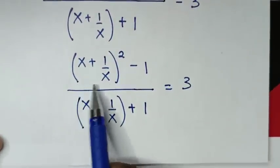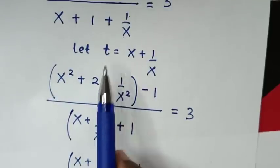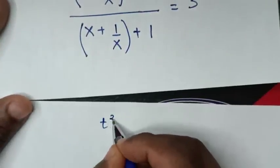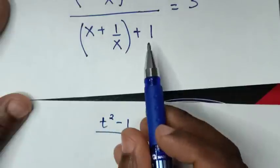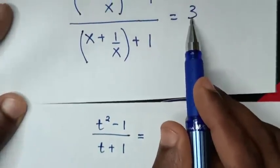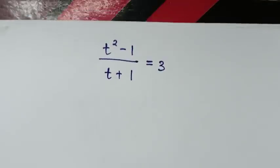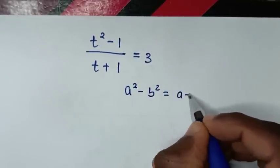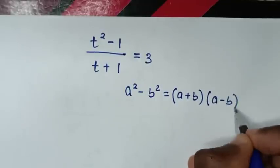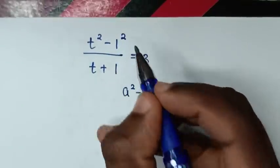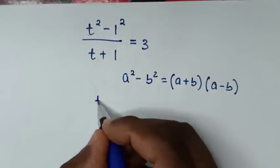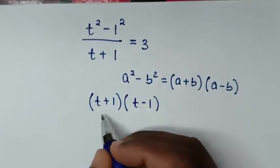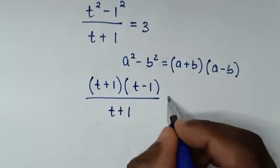From this equation we relate x plus 1/x as t. So our equation becomes t² minus 1, over t plus 1, equal to 3. In the numerator we apply the difference of squares rule: a² minus b² equals (a plus b)(a minus b). So t² minus 1 is (t plus 1)(t minus 1), over (t plus 1), equal to 3.